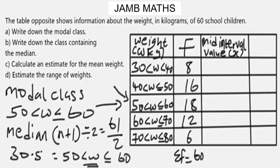For part c, we need to calculate an estimate for the mean weight. For the mean, we use the formula: mean = sigma(fx) ÷ sigma(f). We don't yet have the mid-interval values, which are our x values — we need those to calculate sigma(fx).